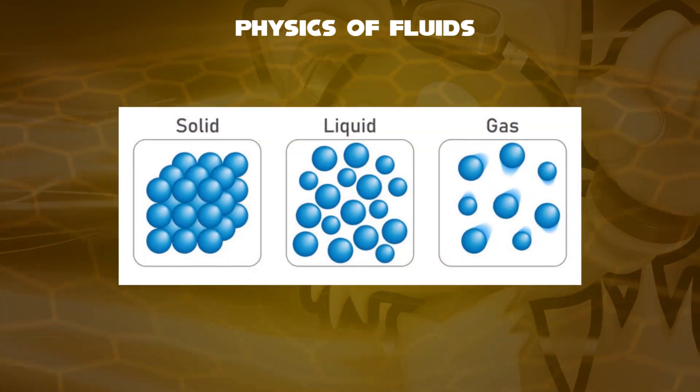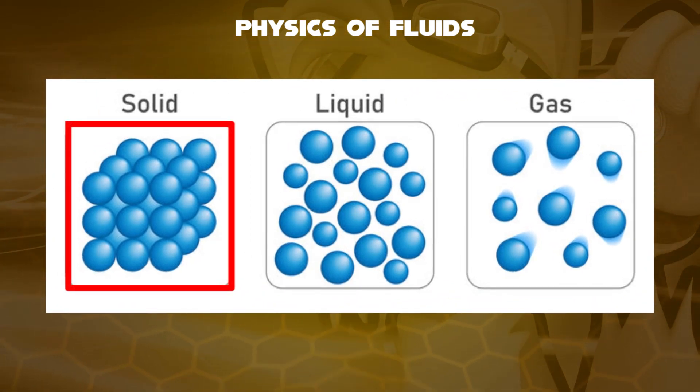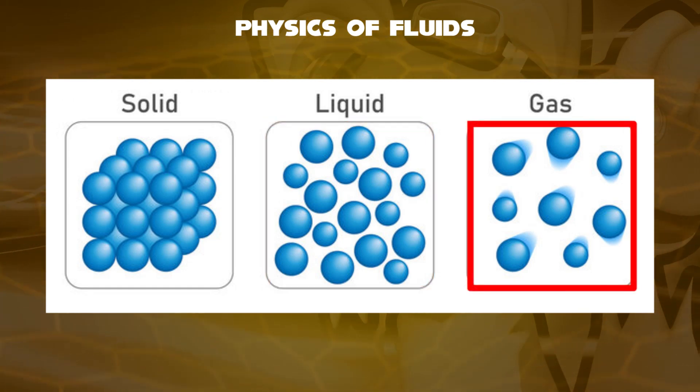Recall the elementary concept used in chemistry, that solids have high density, as well as the atoms are tightly packed. In liquids, the density becomes less, as well as the atoms can move but with least distance. And in gases, the density is very less, as well as the atoms are free to move.